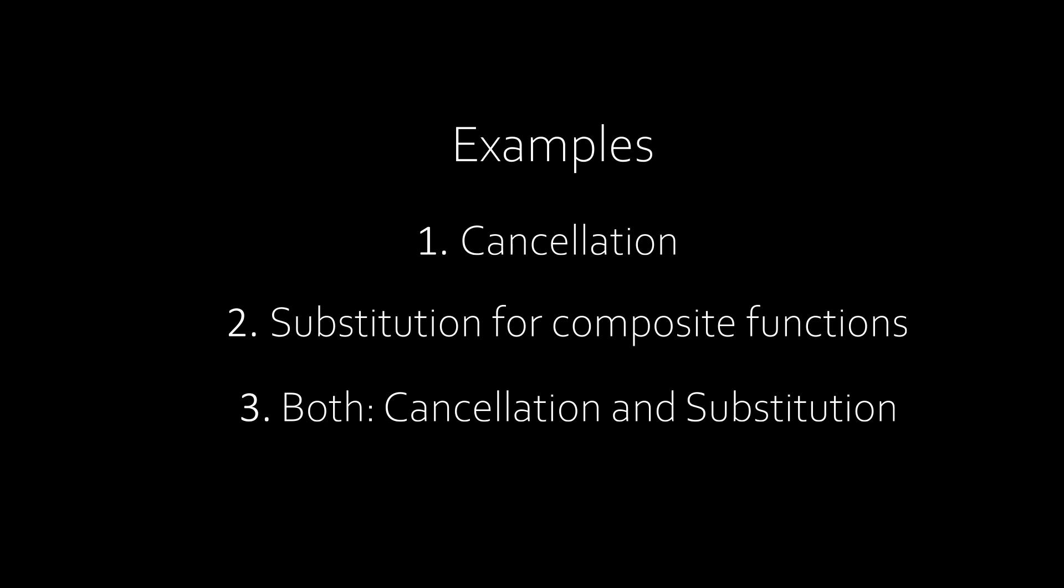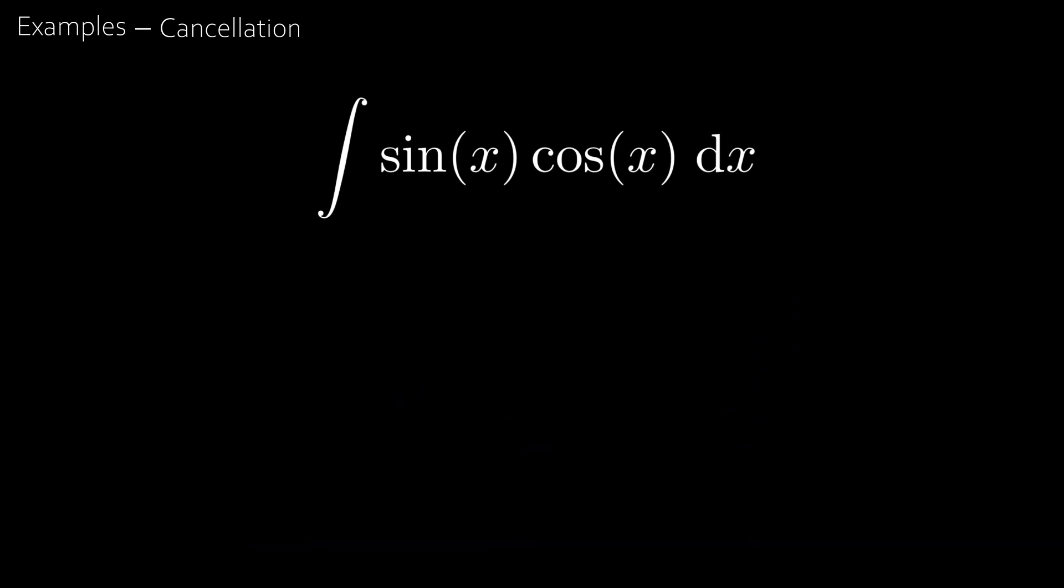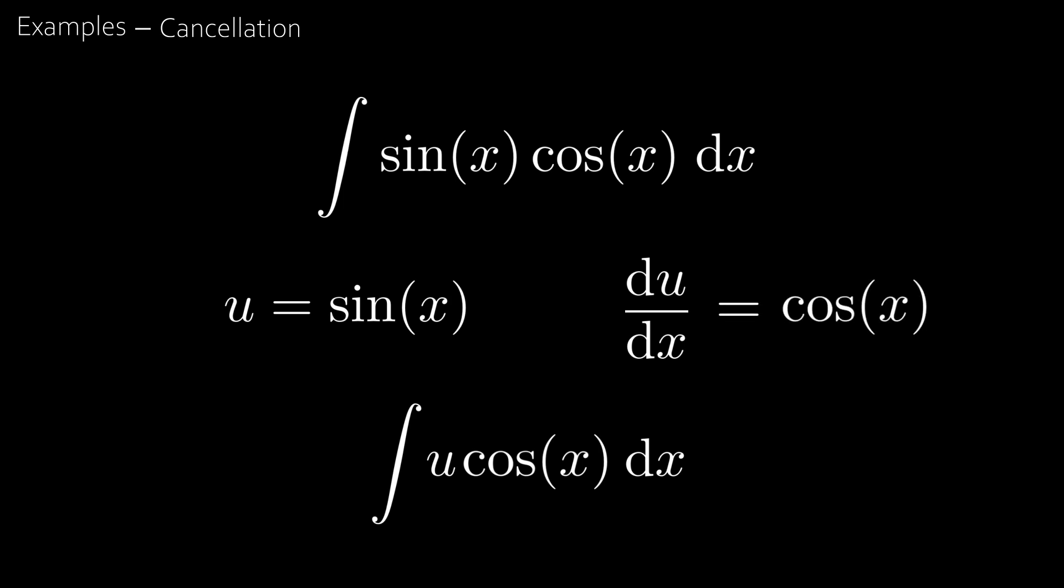Let's start with the first type: cancellation. Say you wanted to find the integral of sine x times cosine x. Let's make the substitution u equal to sine x. Then we have the integral of u cosine x dx. Now we have a u in the integral, so how can we change from integrating with respect to x to integrating with respect to u? The way we do this is we see that du by dx is equal to cosine x, which means dx is equal to du over cosine x.